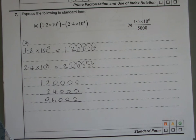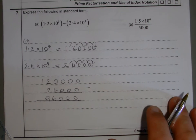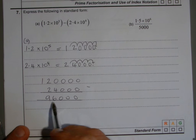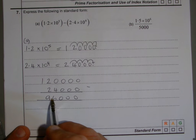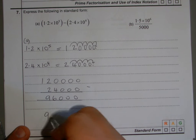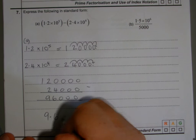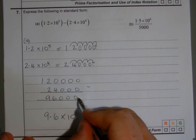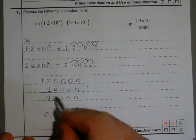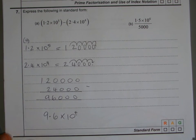So 96,000 is my answer, but they want it in standard form. I need to put the decimal point here so that the number is between 1 and 10. 9.6 is between 1 and 10, times 10... well, how many places did the decimal point move? One, two, three, four. So the power is 4.